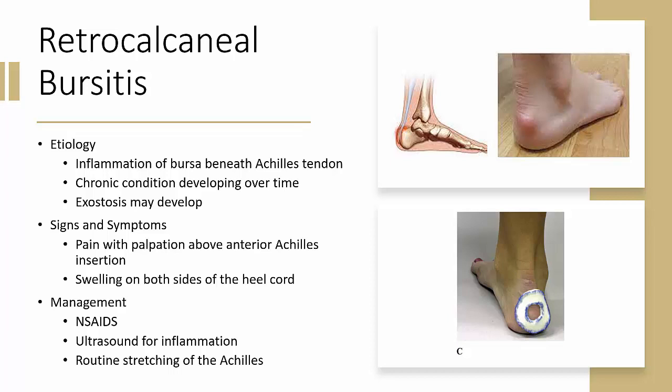An exostosis, also known as Haglund's deformity, which is essentially a bony outgrowth on the heel, may develop. Signs and symptoms include pain with palpation above and anterior to the Achilles tendon insertion, and swelling on both sides of the heel cord. Management includes NSAIDs, ultrasound to reduce inflammation, routine stretching of the gastrocnemius and Achilles tendon, heel lifts, and a donut pad to reduce pressure. Patients may also benefit from larger shoes with a wider heel contour.